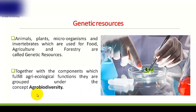Here we discuss a term that is agrobiodiversity. Agrobiodiversity is a subset of general biodiversity. The Convention of Biological Diversity defines it as a broad term that includes all components of biological diversity relevance to food and agriculture, and all components of biological diversity that constitute the agriculture ecosystem. The use of agrobiodiversity contributes to food security, nutrition security, and livelihood security.